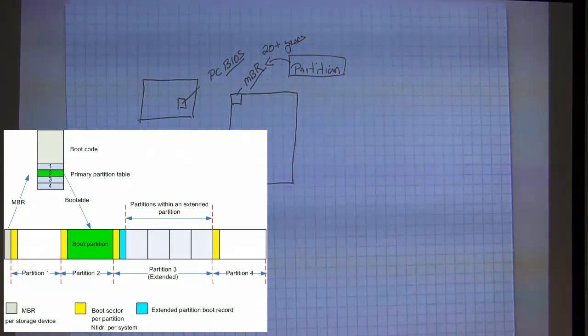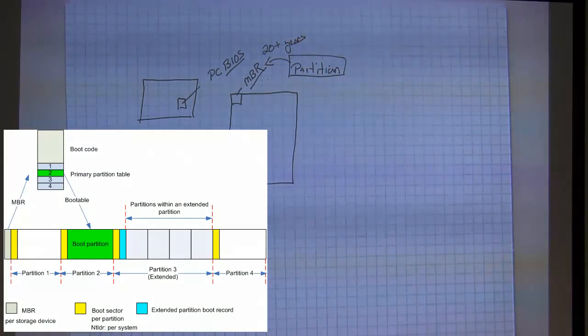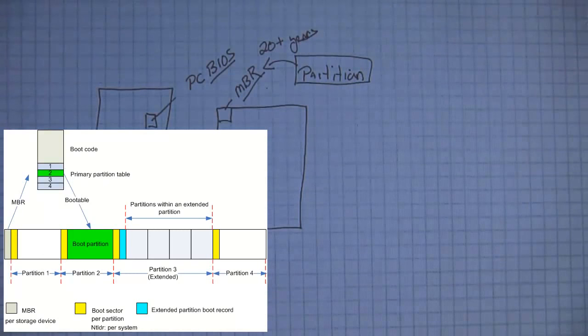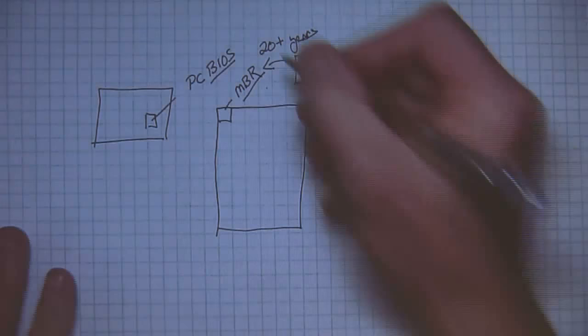This is embedded. This is part of the Master Boot Record. It's just a very small space in which we can describe the disk. So a couple problems are coming about. We've got to get rid of this.